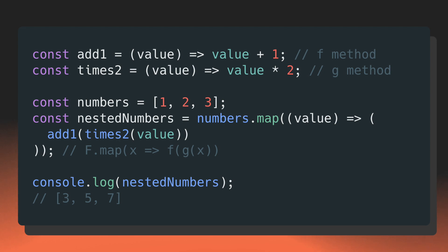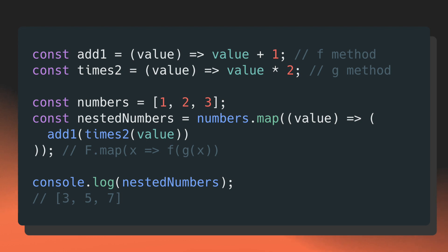Let's make this more clear by looking at a code block. Here I have two methods, add1 and times2, that take in a numerical value and return a new value according to their names. You can think of add1 as our f method and times2 as our g method. Right below that, I have an array named numbers that contains the numbers 1, 2, and 3. Then I map over the numbers array, where for each item I return the nested method calls. The inner method is times2, which returns the new number into our add1 method, and that final value gets inserted into our final array. This will return a new array with the values 3, 5, and 7, since we multiplied each number by 2 and then added 1.